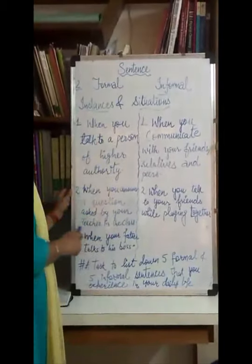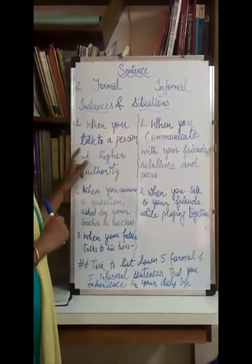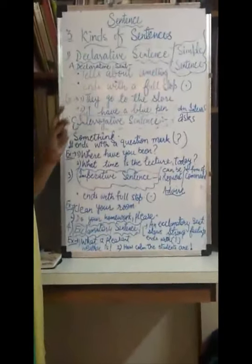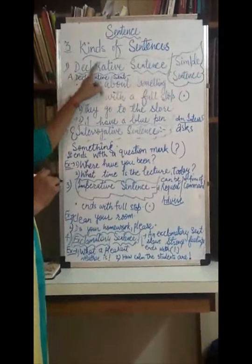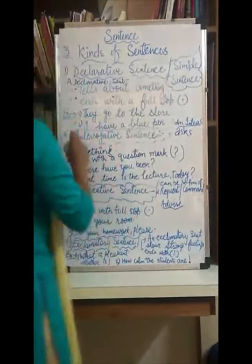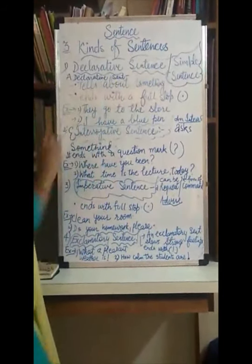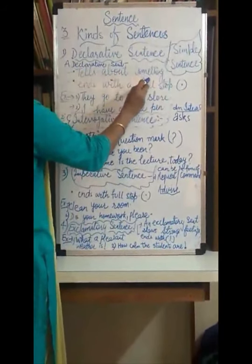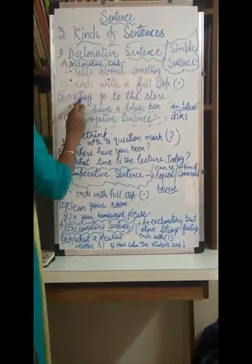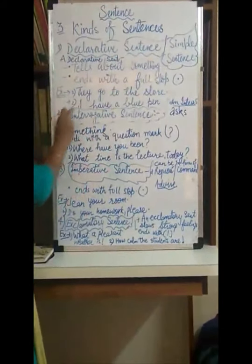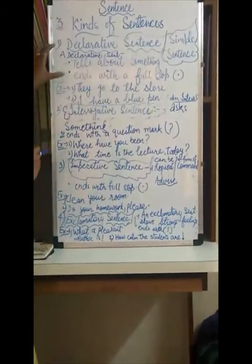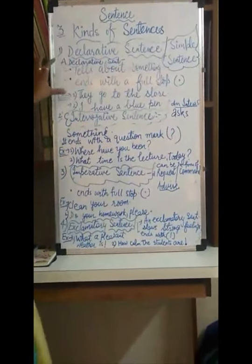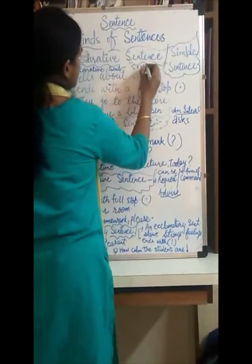I hope that objective is clear and you will be able to write down 5 examples of each. Our third objective is kinds of sentences. The first kind is the declarative sentence, also called a simple sentence. A declarative sentence tells about something and ends with a full stop. Examples: 'when you go to a lecture' and 'I have a blue pen' — somebody is stating or declaring something, showing the structure of subject plus verb plus object.